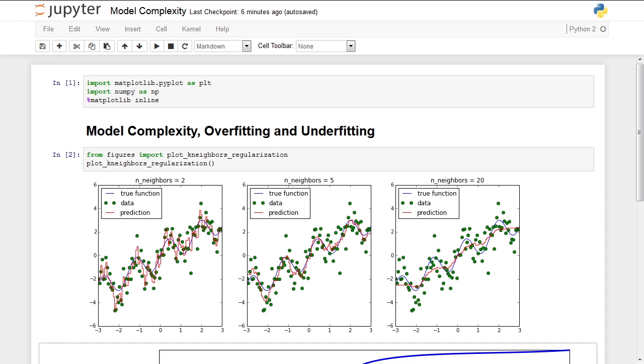If we set the number of neighbors too high, say 20, as in the rightmost panel, we get rid of nearly all of the noise, but our model is not flexible enough to express the variation that comes from the blue function we want to learn.